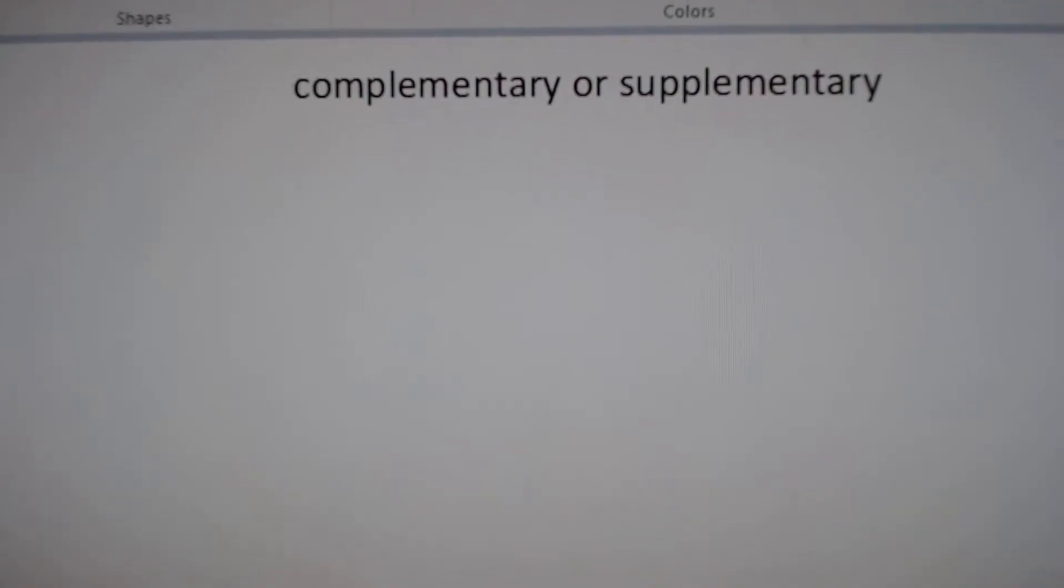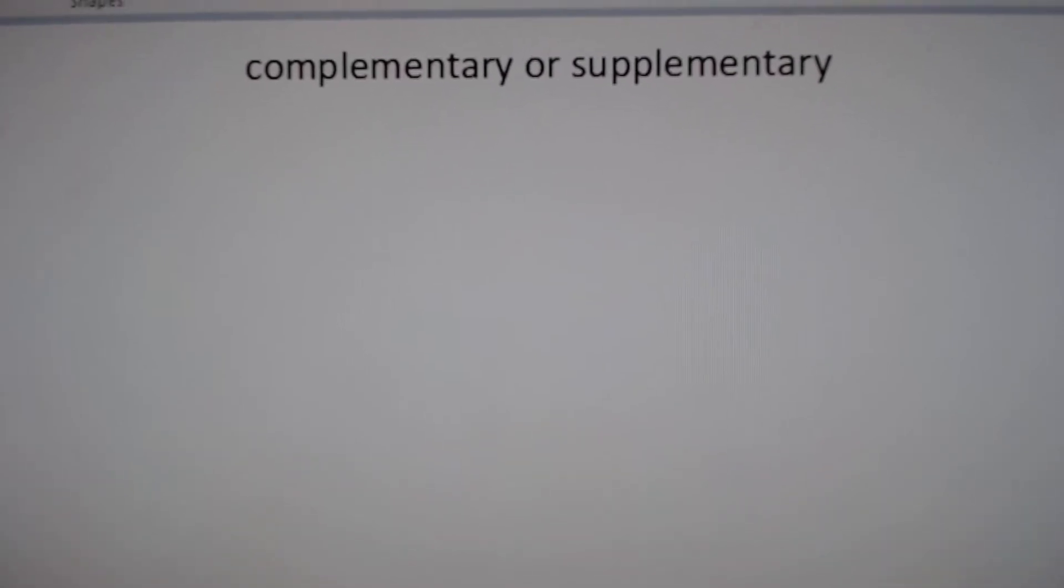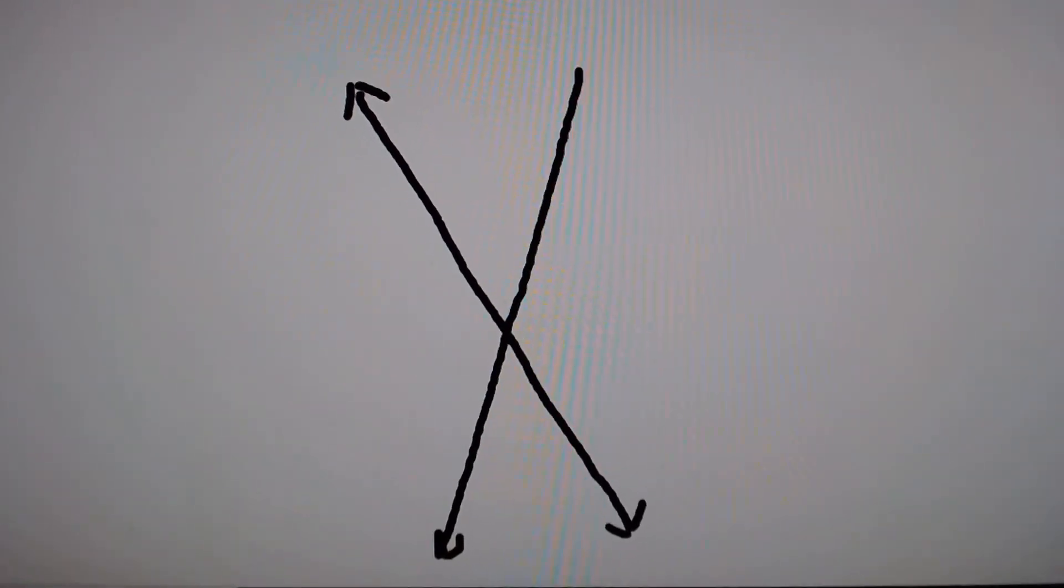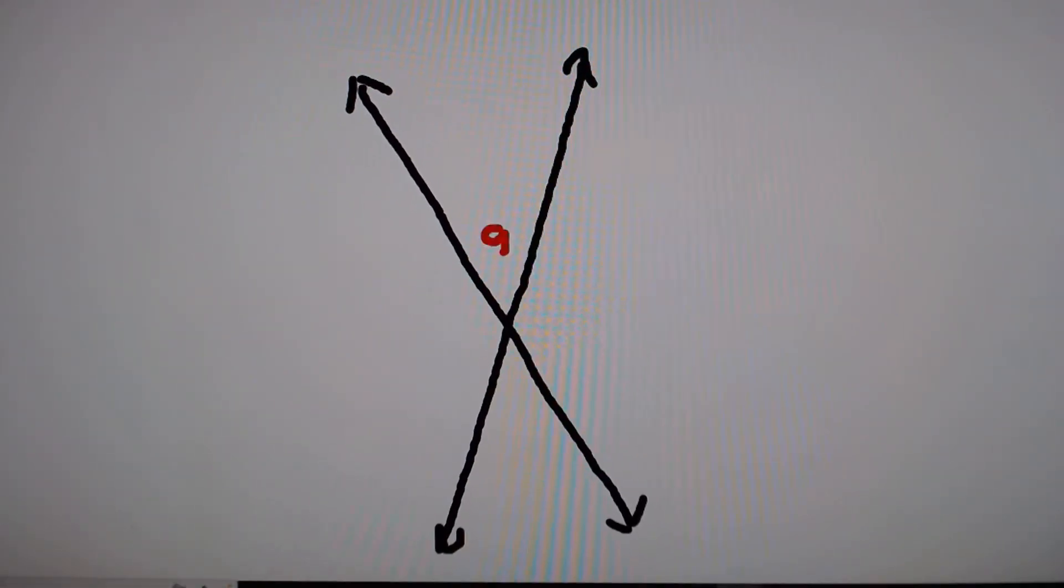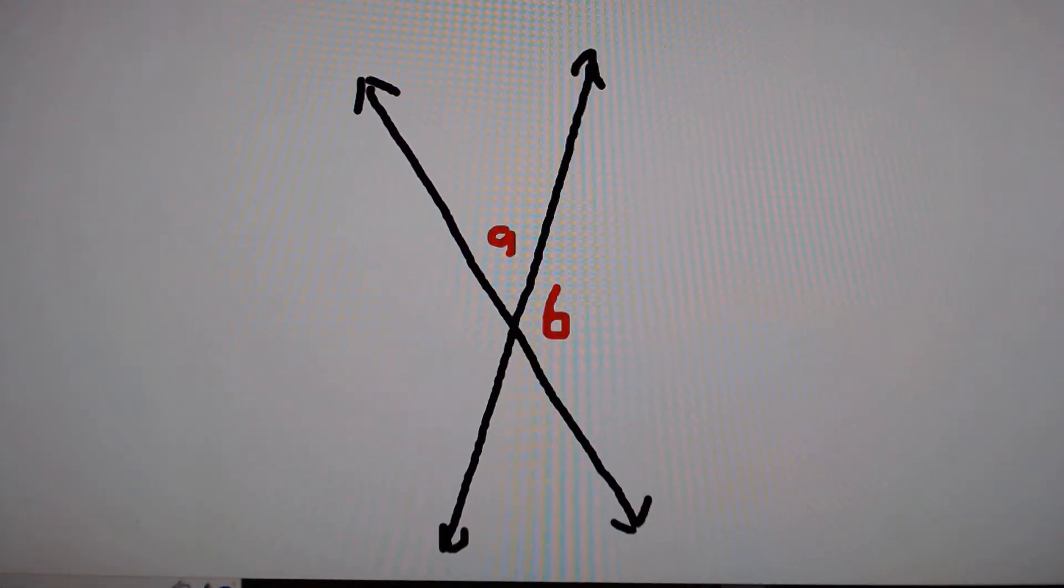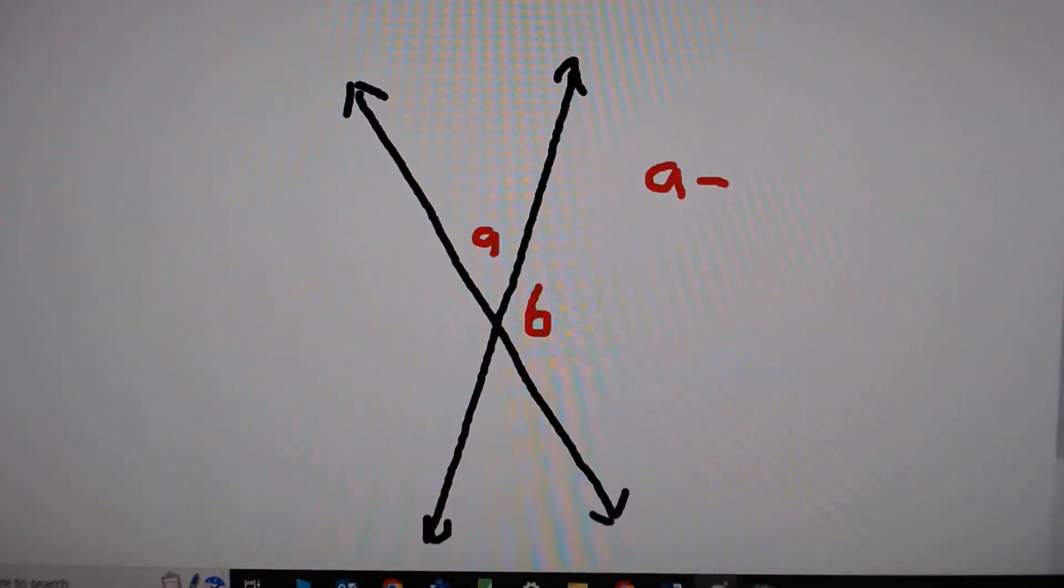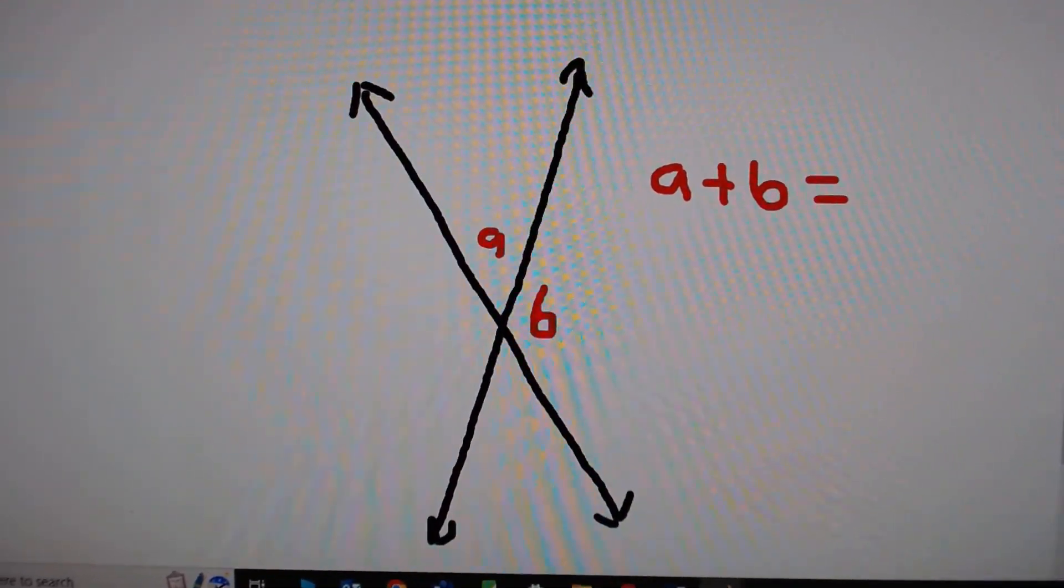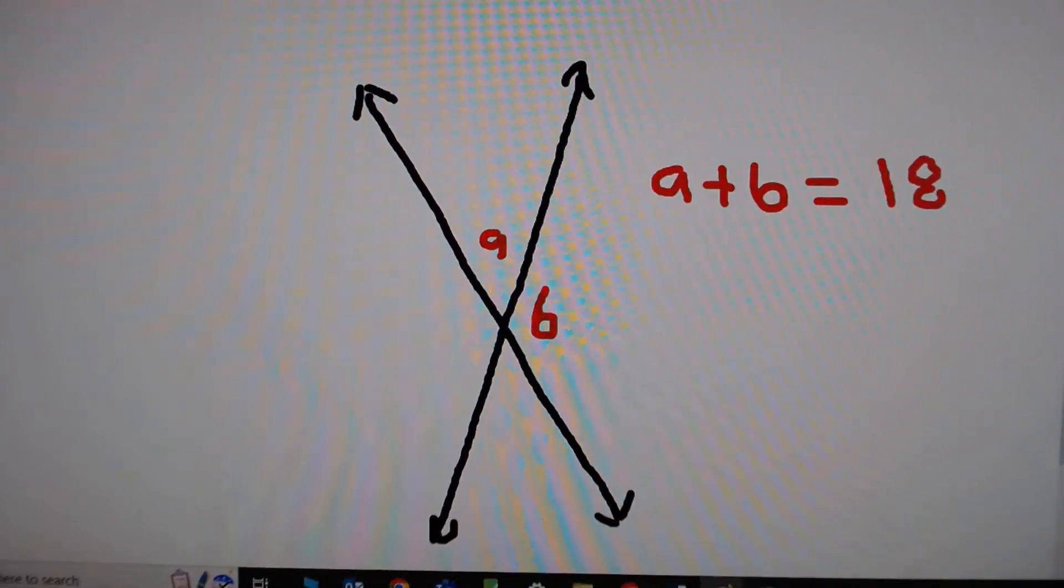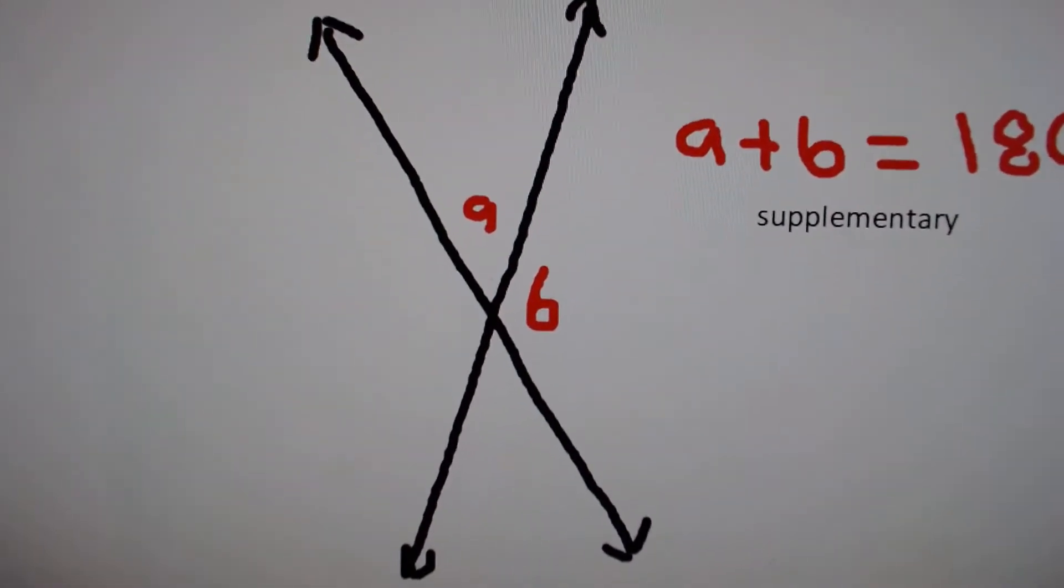Now, for supplementary angles, the sums of two angles will add up to 180 degrees. If I draw a straight line and intersect it with another line, we'll call this angle A and angle B. So A plus B will equal 180 degrees, therefore making it a supplementary angle.